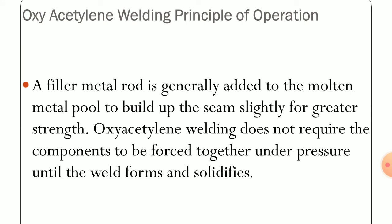A filler metal rod is generally added to the molten metal pool to build up the seam slightly for greater strength. The purpose of the filler rod material is to strengthen the welded region. The oxy-acetylene welding process does not require the components to be forced together under pressure until the weld forms and solidifies.